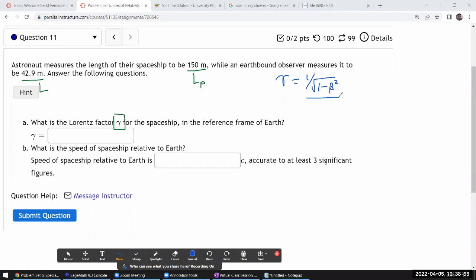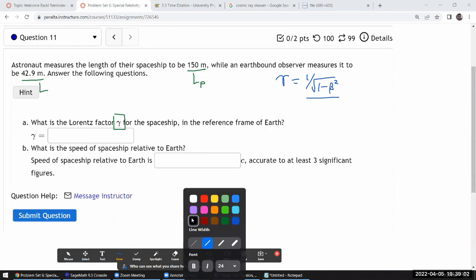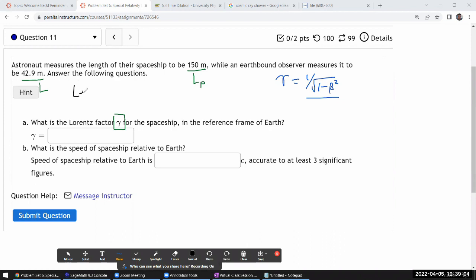And that's because you are actually, the way the question is worded, you are basically given gamma, because this is the expression for length contraction.